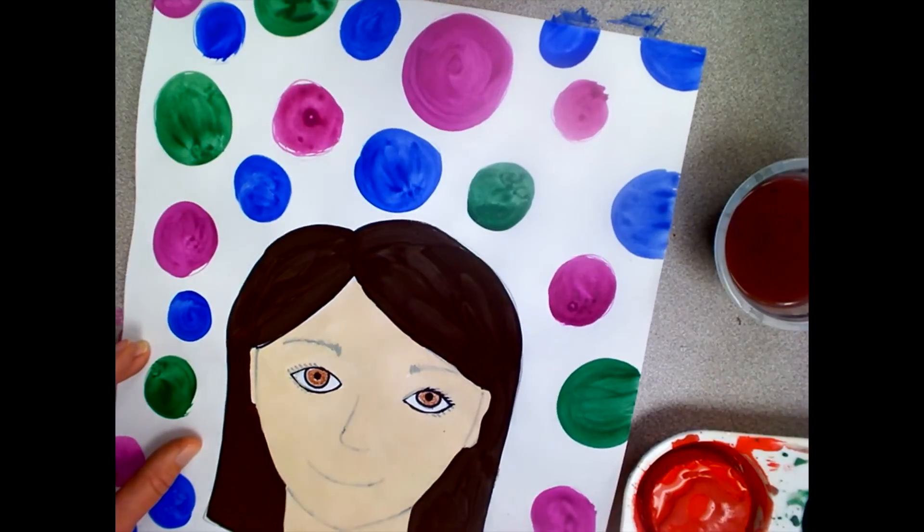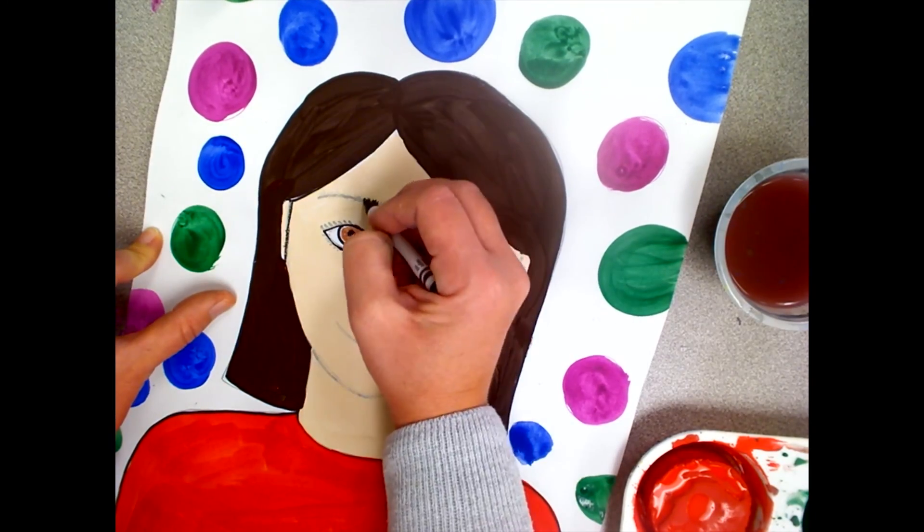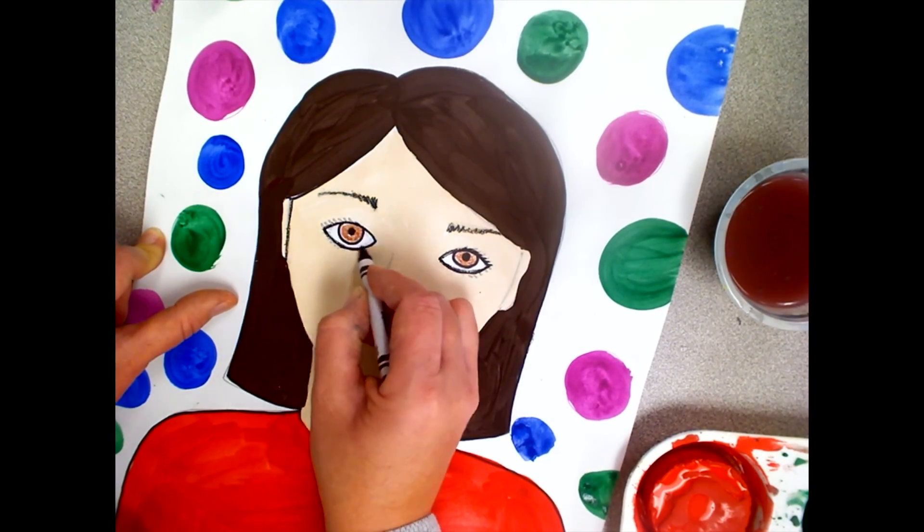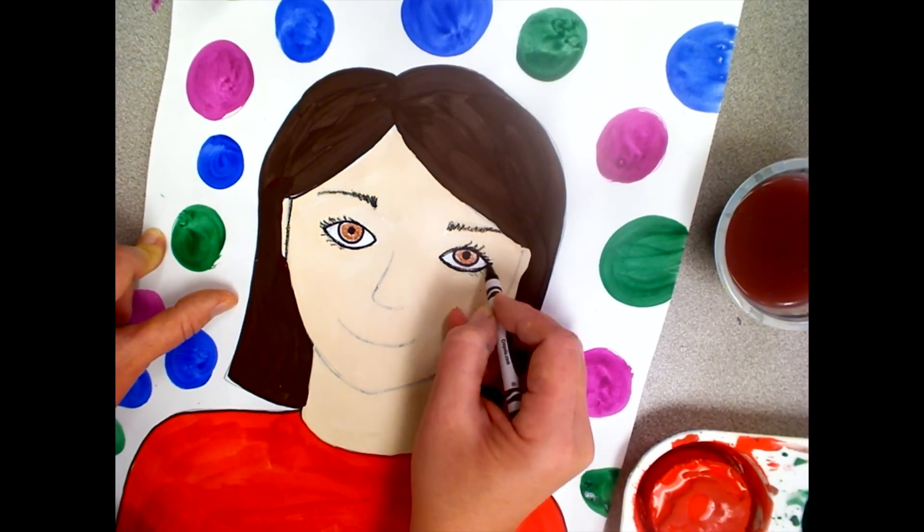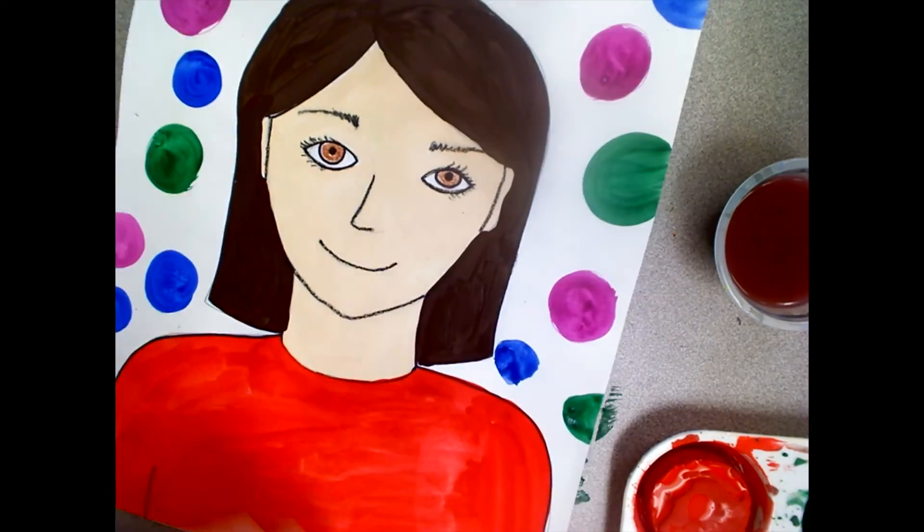Once your painting is completely dry, you're ready to retrace the features of your face. Take a black crayon and retrace everything that is on your face, including your eyes, your eyebrows, your ears, your nose, your mouth, and your chin.